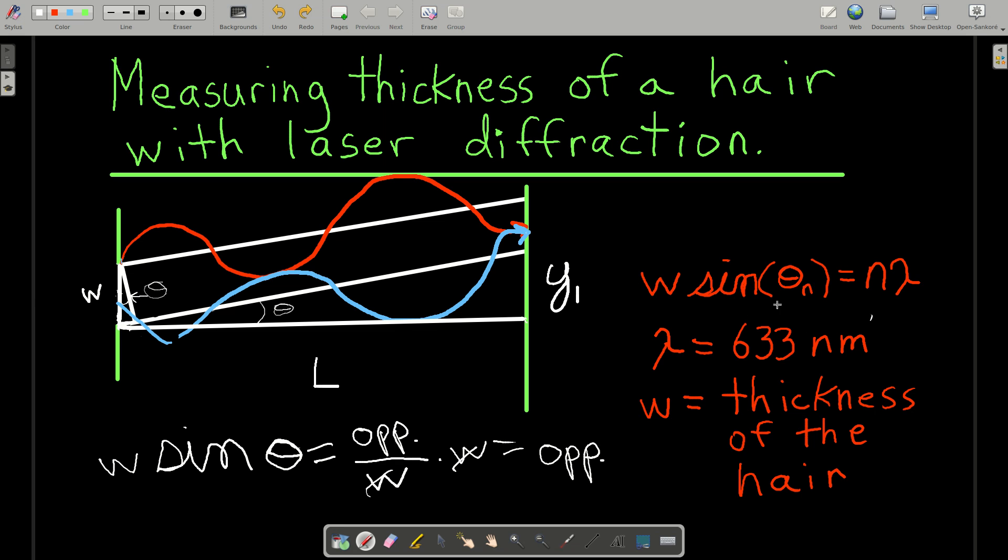That's how we get W sin θ equals N times lambda. You're going to get destructive interference showing up on the wall any time the thickness of the hair W times the sine of the angle θ is equal to some integer 1, 2, 3, 4, etc., times the wavelength of the light.